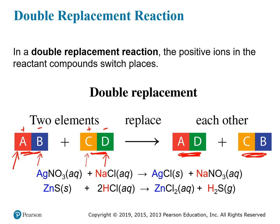Double replacement reactions are sometimes called precipitation reactions because they often produce a solid. For example, silver leaves the nitrate ion and joins with chloride — silver chloride forms as a solid and precipitates out as a cloudy substance. In another example, zinc sulfide reacting with HCl produces hydrogen sulfide gas, which drives the reaction, while zinc and chloride ions remain in solution and can form zinc chloride.